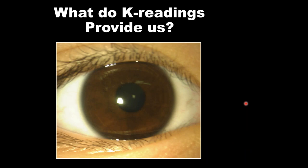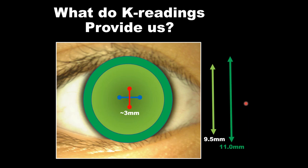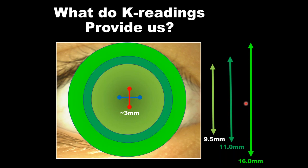Consider that flat K and steep K measurements cover a very confined central area. How many contact lenses are actually three millimeters in diameter? A corneal GP at 9.5mm shows how much we're missing when we build lenses well past our area of measurement. An ortho-K lens is usually 10.5 to 11 millimeters, so trying to build that reverse geometry shape using K readings is very limited. For a scleral lens, K readings are almost useless.